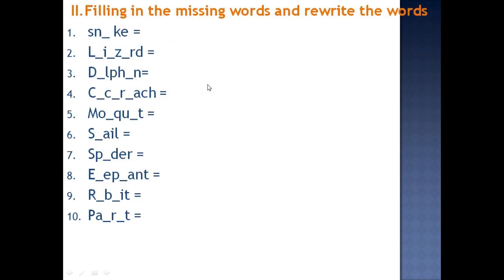So second slide. Filling the missing words and rewrite the words. So missing words. See here what will be there? S and A dash K. It's a snake. Snake, lizard, dolphin, cockroach, mosquito, snail, spider, elephant, rabbit, parrot. So you have to write the missing letter and rewrite the word here. So answers are given in the last slide.